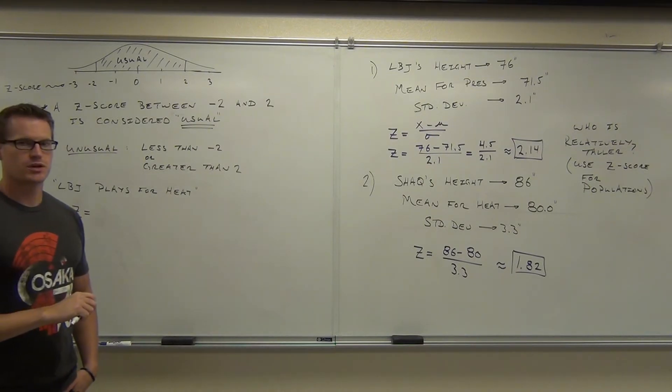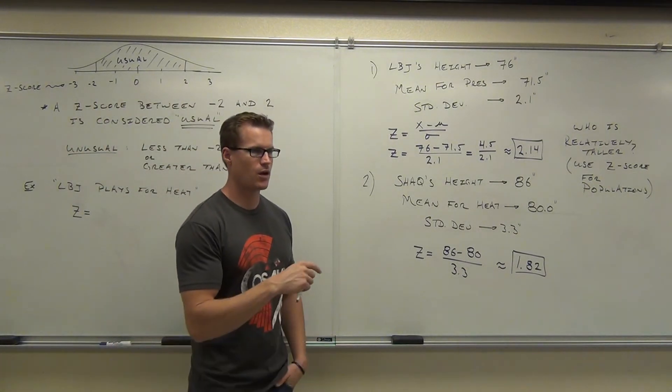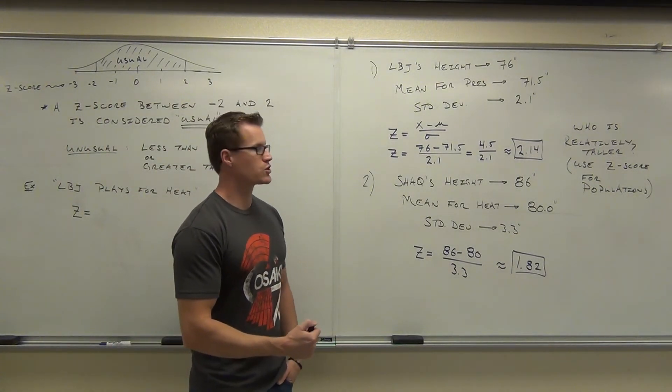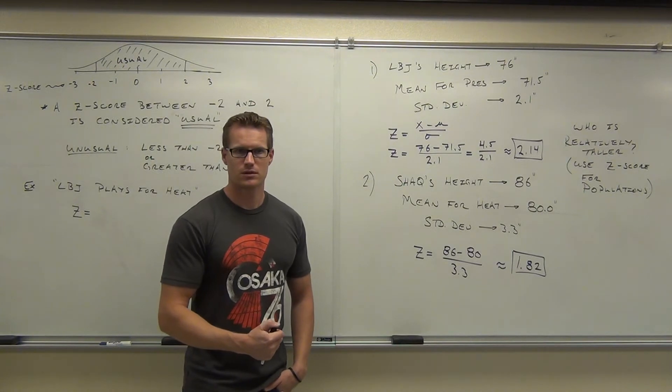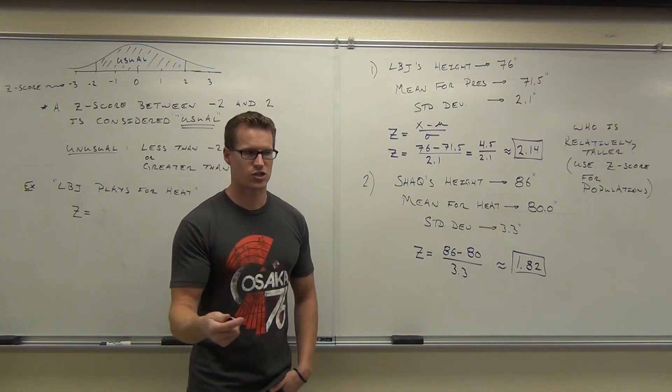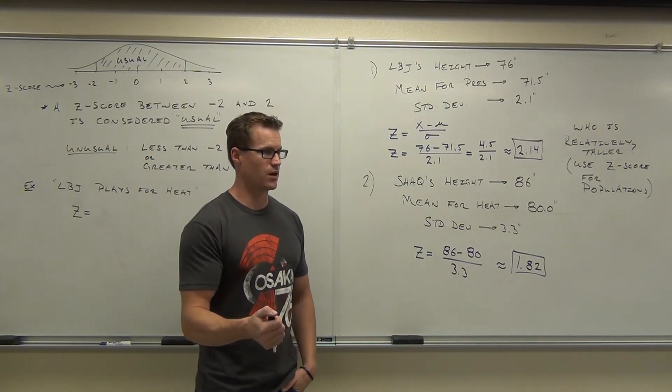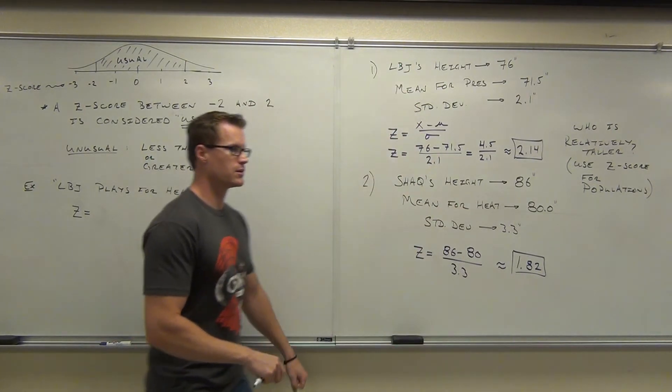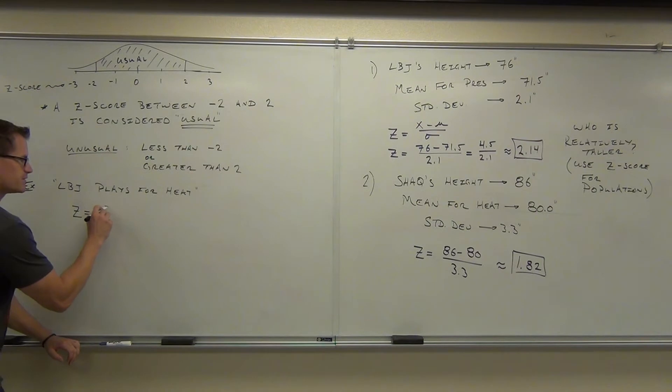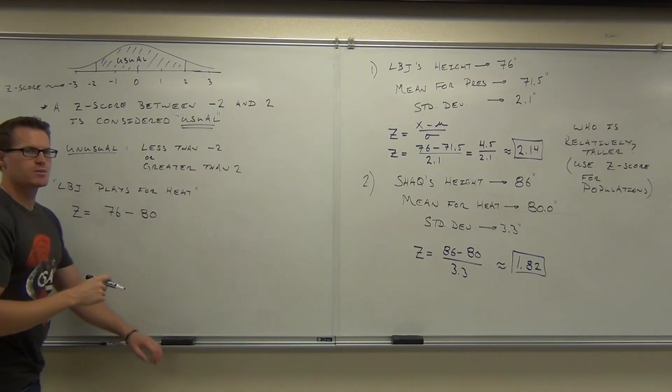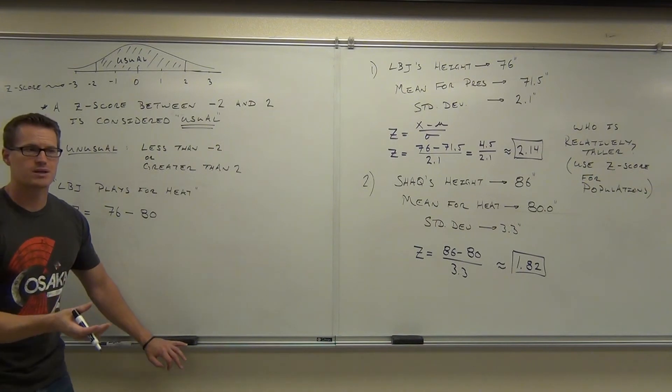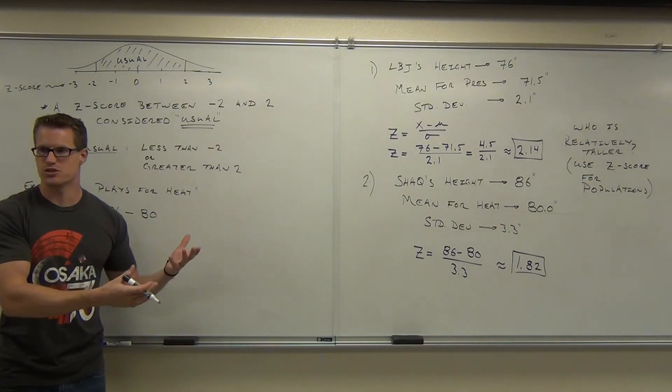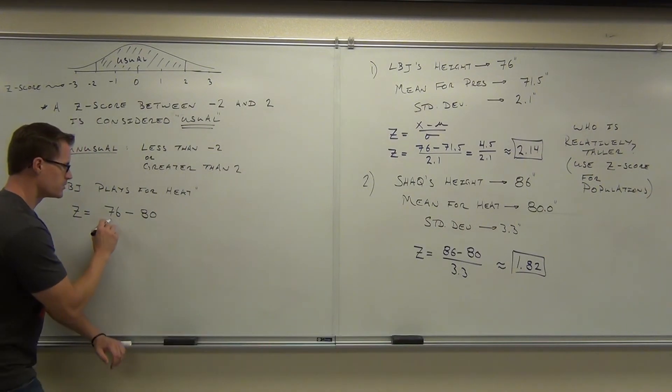Now, because we're putting, I want to make sure you're doing this right right now, because you're putting LBJ on the Heat's team, what's your X value? 76. Great. That's still his height. That didn't change, but what mean should you be using now? 80. Yeah, he's now on the Heat. So, we're using him for the Heat. So, we'll have the 76, that's him, minus 80, he's now on that team. I'm not going to be able to calculate the new average with him on it, because clearly, I mean, I don't know the information, so we're going to stick with the same average.